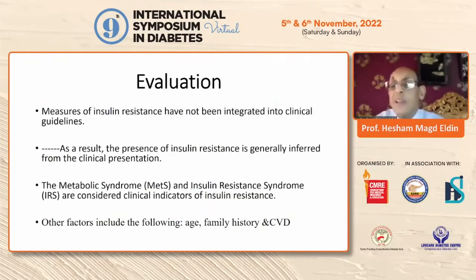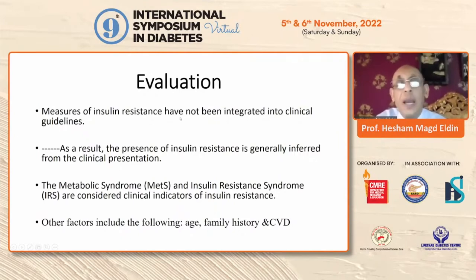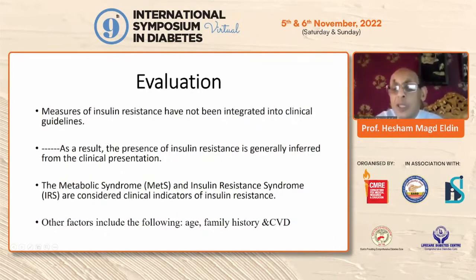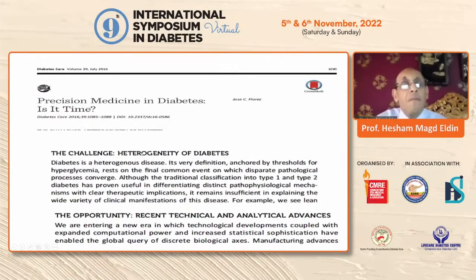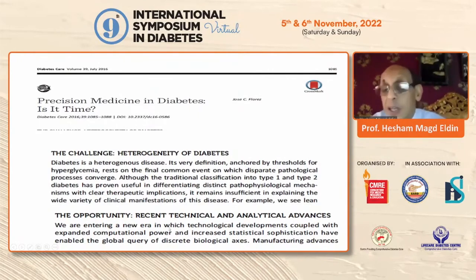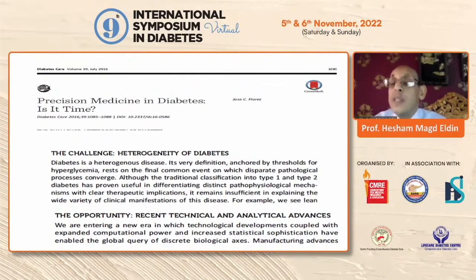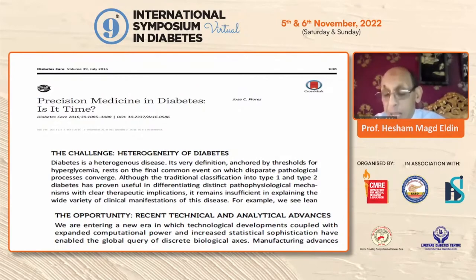Measures of insulin resistance have not been integrated into clinical guidelines, so the presence of insulin resistance is generally inferred or suspected from the clinical presentation, including the different components of the metabolic syndrome and insulin resistance syndrome. We are now entering the era of precision medicine, where genetic background and patient clustering can help identify which patients with insulin resistance will develop complications and which will not, and why some obese people develop insulin resistance while others do not.